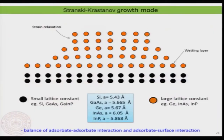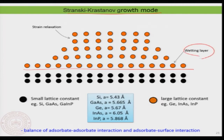Now, the most interesting type of growth is the so-called Stranski-Krastanov growth mode, where you have basically the first wetting layer and then island formation. What is really happening here? It is a very special case. The first layer right at the interface is known as a wetting layer, and on top of the wetting layer you always find island formation. In this particular case, there is a nice balance of adsorbate-adsorbate interaction and adsorbate-surface interaction.